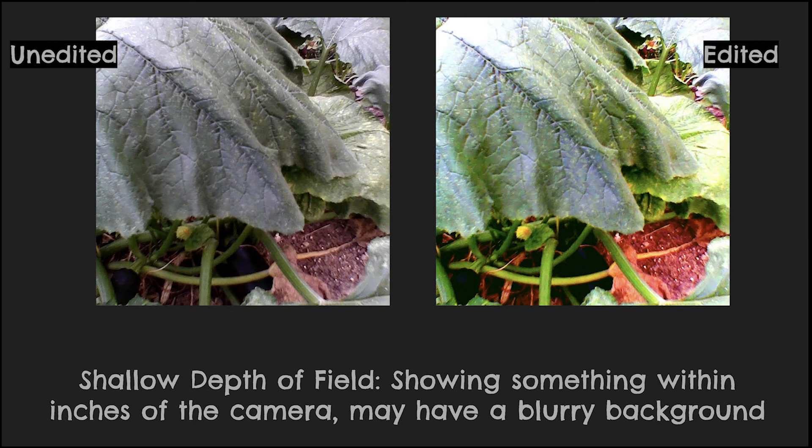Shallow depth of field in photography is when you're showing something within inches of the camera — so up really close — and then it might create a blurry background, which is perfectly okay. As you can see here, I took photos within my garden to show the leaf up close and have blurrier vines in the background.